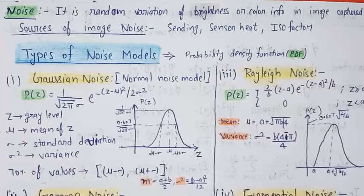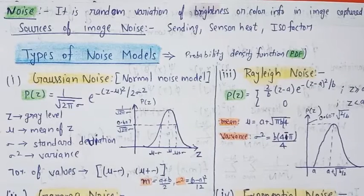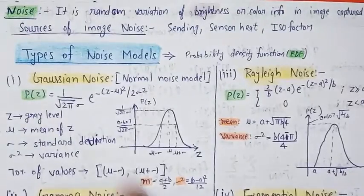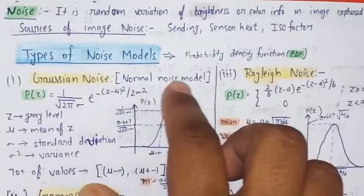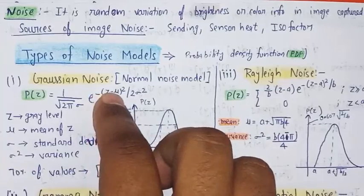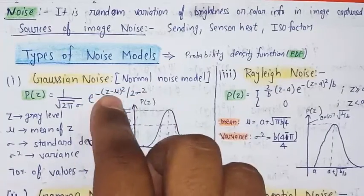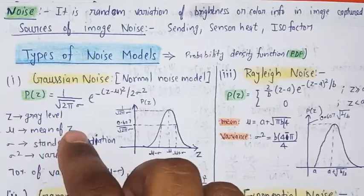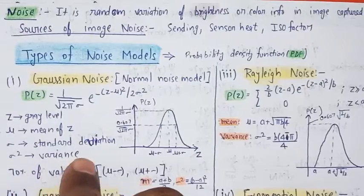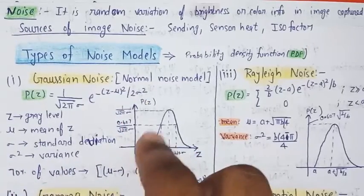If I talk about the types of noise models, first we have to calculate the probability density function, which is denoted by PDF or p(z). The first noise model is Gaussian noise. It is a normal noise model where p(z) = 1 / (√(2π) · σ) · e^(-(z-μ)² / (2σ²)), where z is the gray level, μ is the mean of z, σ is the standard deviation, and σ² is the variance.